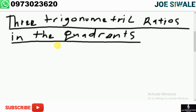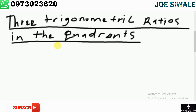In the first quadrant, all the three trigonometric ratios are positive. This means sine, cosine, and tan are all positive. Then in the second quadrant, sine is positive, which means cosine and tan are negative.